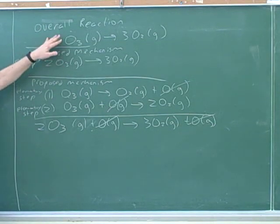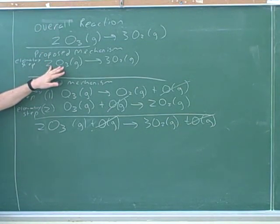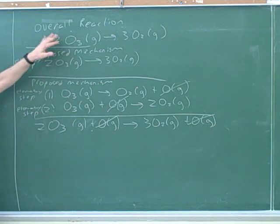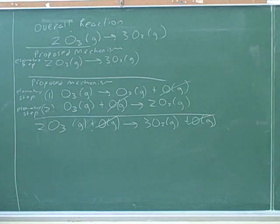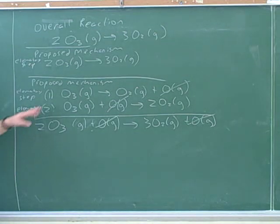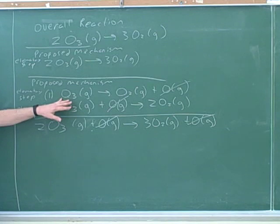It's possible that the overall reaction happened in one elementary step, but it's also possible it happened in two elementary steps, neither of which perfectly matches the overall reaction. The overall reaction just tells you the starting materials and the products without telling you what's actually going on between the molecules. The elementary steps tell you what's actually going on — how things are actually interacting with each other.